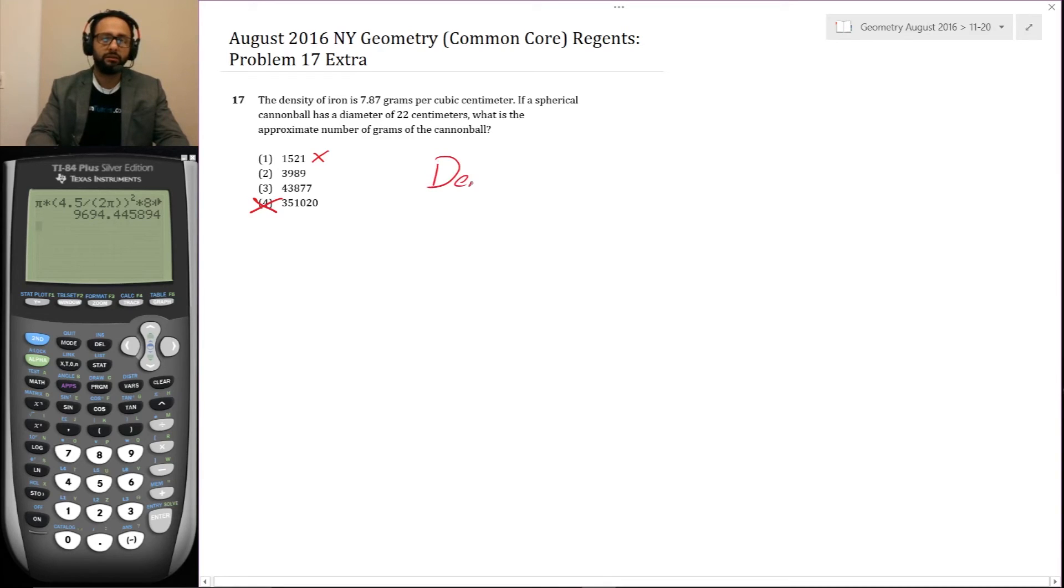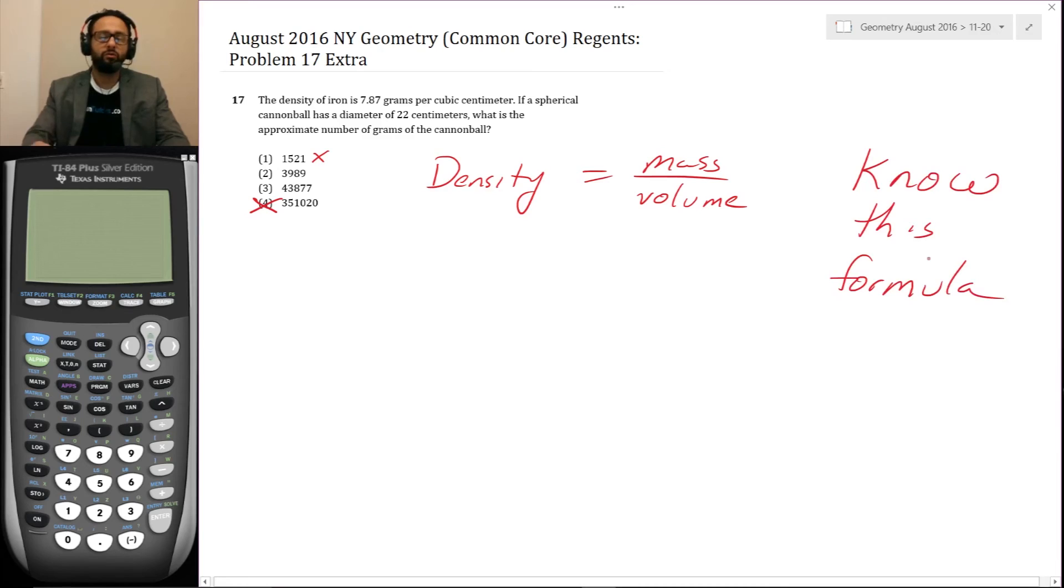The density is equal to mass over volume. Now here's an issue. We're not given the density formula for anything at all. So we do have to know this. We have to know this formula. Who knew that in the geometry test, you have to know a chemistry formula, but you do.